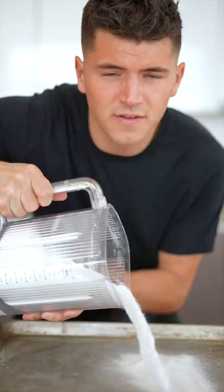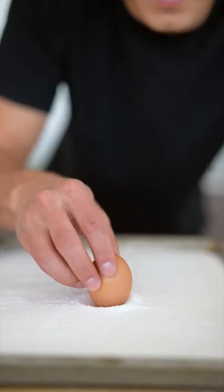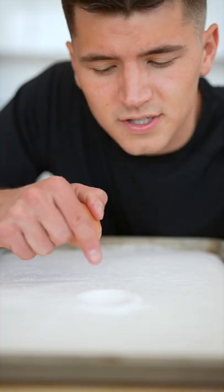Pour half this mixture evenly across a baking sheet. Using a whole egg, make 12 indents into the mixture. The yolks will sit here.